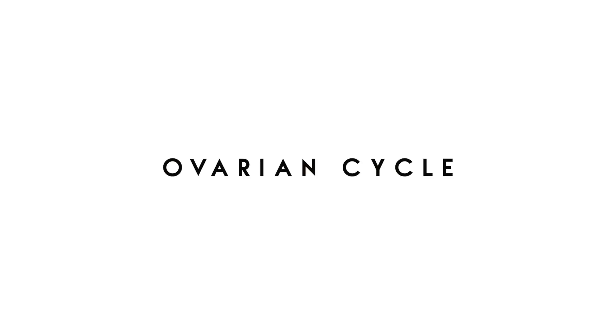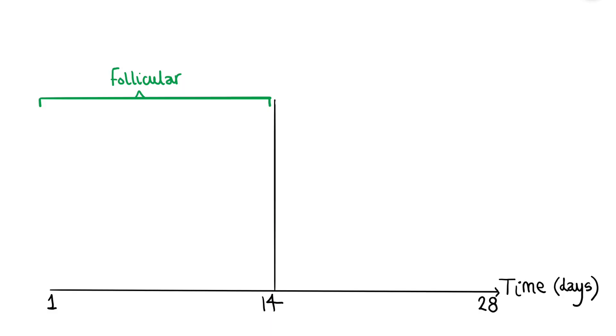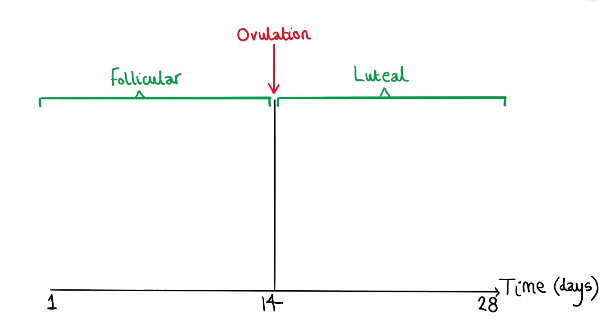Starting with the ovarian cycle, it's split into two phases. The first is the follicular phase, which starts on day one of your period and runs up to roughly day 14 when ovulation occurs and an oocyte is released from the ovaries. The second is the luteal phase, which starts at ovulation and continues to the end of the cycle. It's normally during the luteal phase — after day 14 — when people experience pre-menstrual symptoms like bloating, headaches, fatigue, and breast tenderness, all related to hormonal changes.